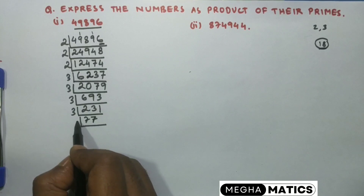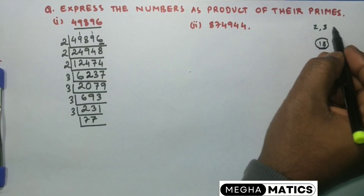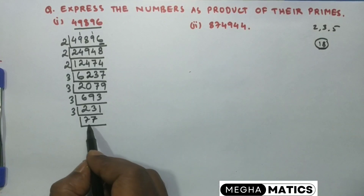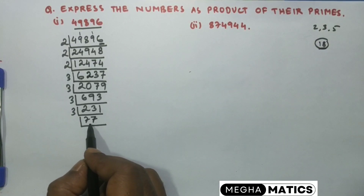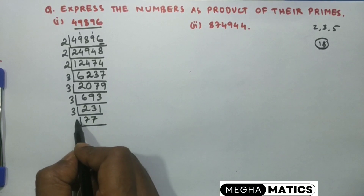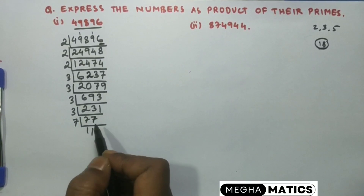We try 5 next — but this number is not divisible by 5. Then we try 7, since 7 is also a prime number. Trying by 7, we find that 7 goes 11 times.